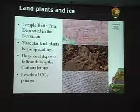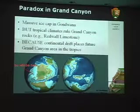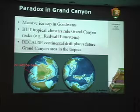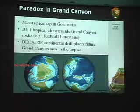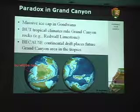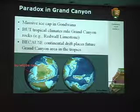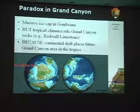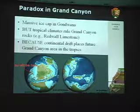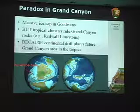As land plants diversified across the landscape, we saw carbon dioxide levels fall even further. They fell far enough that another ice age started — a big ice age down in the Southern Hemisphere. A land mass that today we call Gondwana was covered with ice sheets. This was about 340 million years ago.